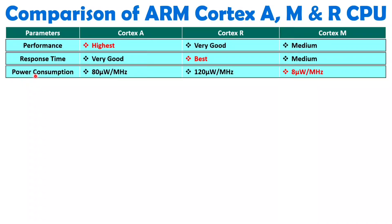When we talk about power consumption, Cortex-M is designed for embedded systems where minimum power consumption is essential, since these applications run on battery-operated systems. Power consumption with Cortex-M is very low at 1 microwatt per megahertz. Cortex-R has the highest power consumption at 120 microwatts per megahertz, and Cortex-A is at 80 microwatts per megahertz. With Cortex-A and Cortex-R, power is already supplied externally, so it is less of a concern.